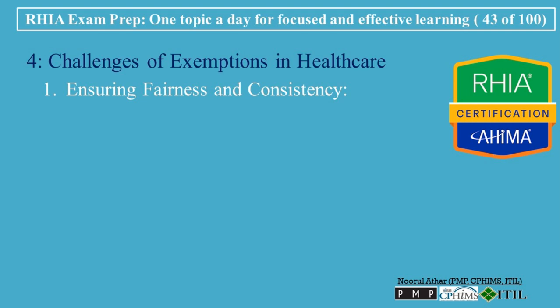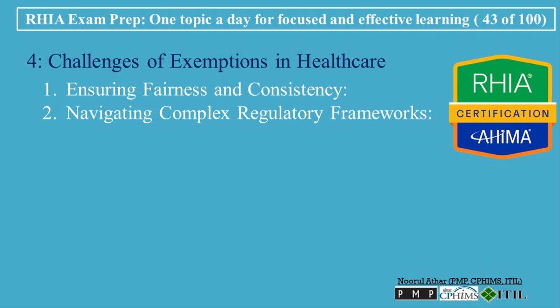Ensuring Fairness and Consistency: A major challenge is ensuring that exemptions are applied fairly and consistently. Inconsistent application of exemptions can create disparities in healthcare access and compliance, leading to concerns about equity. Healthcare organizations and regulatory bodies must ensure that exemption processes are transparent and equitable. Navigating Complex Regulatory Frameworks: Healthcare regulations can be complex, and determining eligibility for exemptions often requires navigating complicated legal and policy frameworks, which can be particularly challenging for smaller providers or patients without access to legal or administrative expertise.